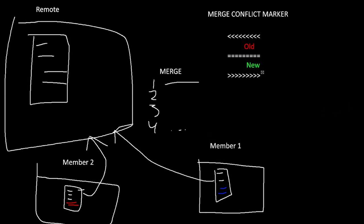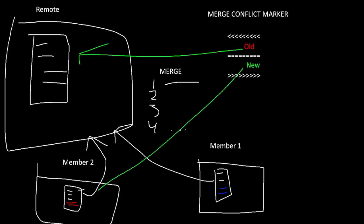It puts the old version here and the new version here. The terminology of what's new versus old depends on what type of merge you are doing. But typically, the old version is the one on the remote, and the new version is the one on local.